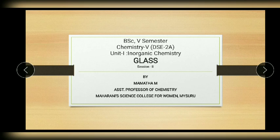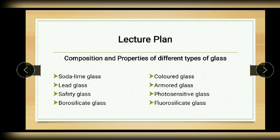Hello dear students. In the previous lecture we had learnt about the definition of glass, its classification and its manufacturing process. In this lecture, let us learn about different types of glasses and their composition and uses. You know that the properties of a material depends on its composition. The same thing is applicable for glass also. Many desirable properties can be obtained by adding other substances along with main raw materials during the manufacturing process of glass. Let us learn about the different types of glasses one by one.